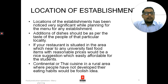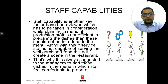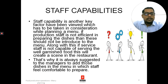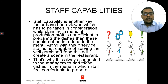So local dishes should be there inside the menu so that local people can be catered and revenue can be generated. Next is staff capability. Staff capability is another key factor which has to be taken into consideration while planning a menu. If production staff is not proficient in preparing the dishes, those dishes should not be introduced in the menu. Similarly, if service staff is not capable of serving well-garnished food, this will create a scene. It is always suggested to add those dishes in the menu in which staff feel comfortable.